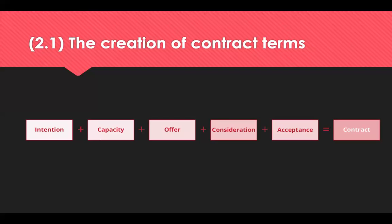Some organisations use standard forms or model contracts, which are templated contracts comprising standardised, non-negotiable terms and conditions. This is used to reduce the time required to negotiate specific terms. In specific industry sectors like construction and engineering, parties enter into a standard contract — in effect, it's a take it or leave it approach.